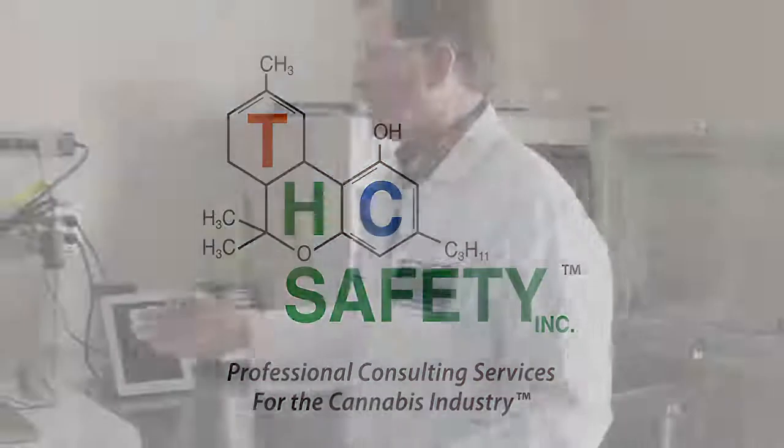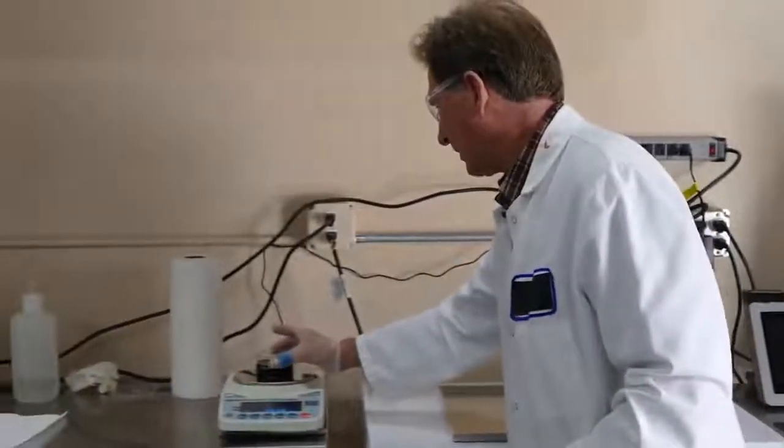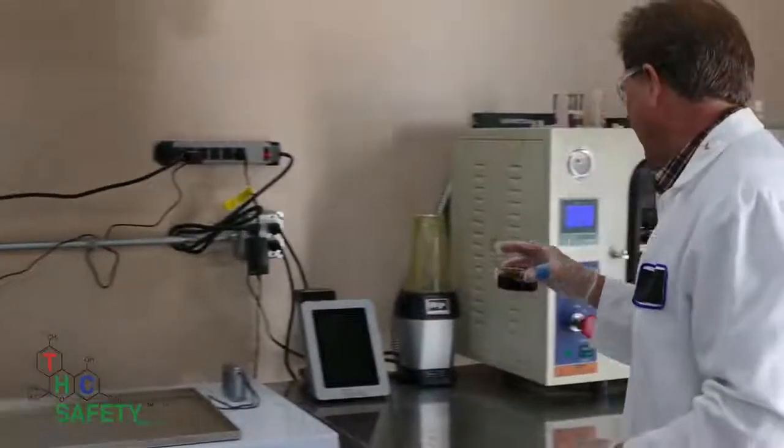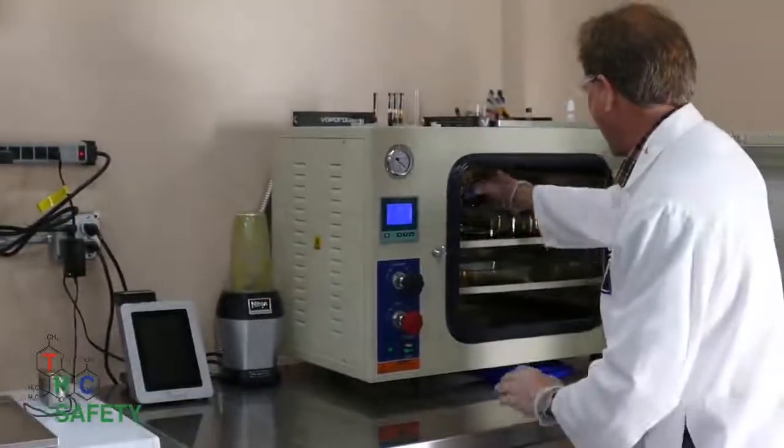So we're going to take our newly harvested material that has a little bit of ethanol, and we're going to place it in our vacuum oven.